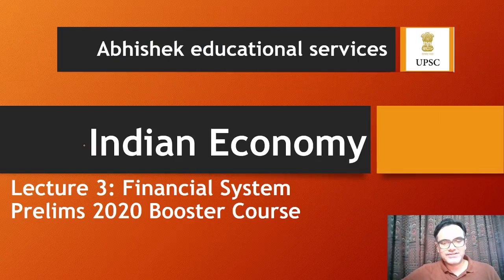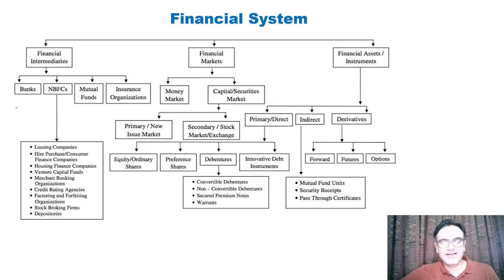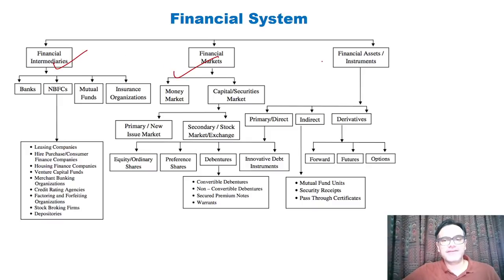Starting with today's lecture on Indian Economy Financial System. Most students must have already read all these aspects, so we are going to do a quick revision as well as study current affairs and what type of questions can be asked. When we talk about the financial system, there are three basic things: financial intermediaries, financial markets, and financial instruments. Together, they create financial services.